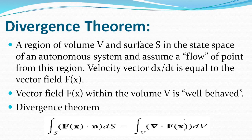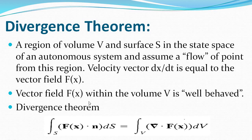Next is the divergence theorem. In this theorem, V and S denote a region of volume V and a surface S in the state space of an autonomous system. Assuming a flow of points from this region, the velocity vector dx/dt equals the vector field f(x). The relation holds between the volume integral of the divergence of f(x) and the surface integral of the outward normal component of f(x).